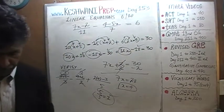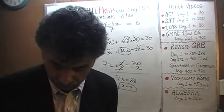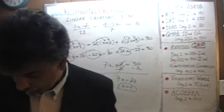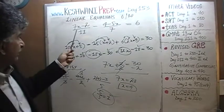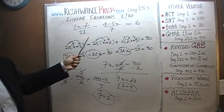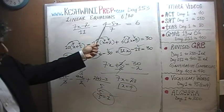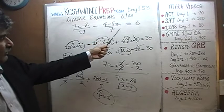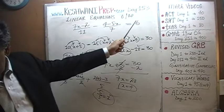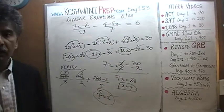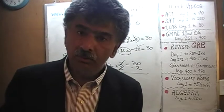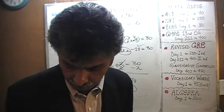Go ahead, do it yourself first. I'll give you 5 seconds for you to be able to pause and unpause the video. One more time: 7x minus 2 over 11, minus 4 minus 5x over 7, equals 6. Do it yourself first.